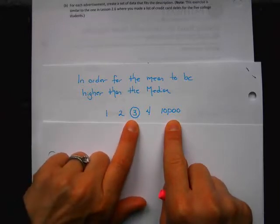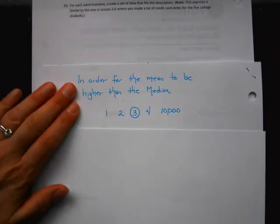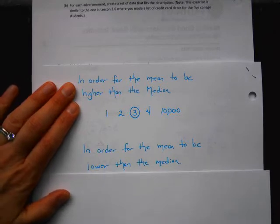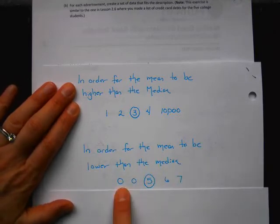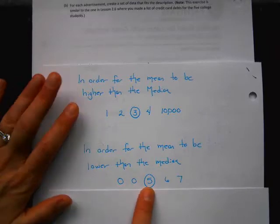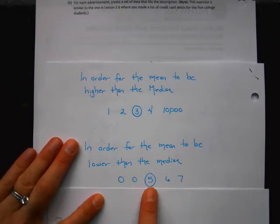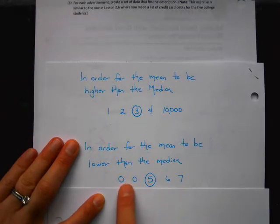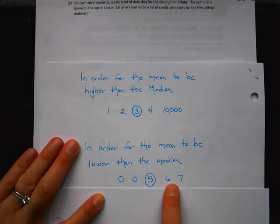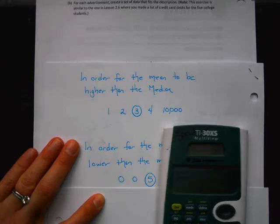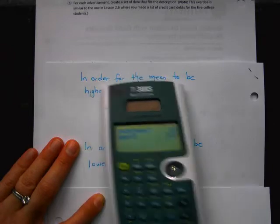This can happen in the other direction too. If the mean is less than the median, you get the extreme values on the left-hand side of the median. I could have made those negatives and it really would have impacted it. The median for that set is 5, and you can see there are a lot of smaller values to the left. The mean comes out to 3.6, so it's definitely smaller than the median.